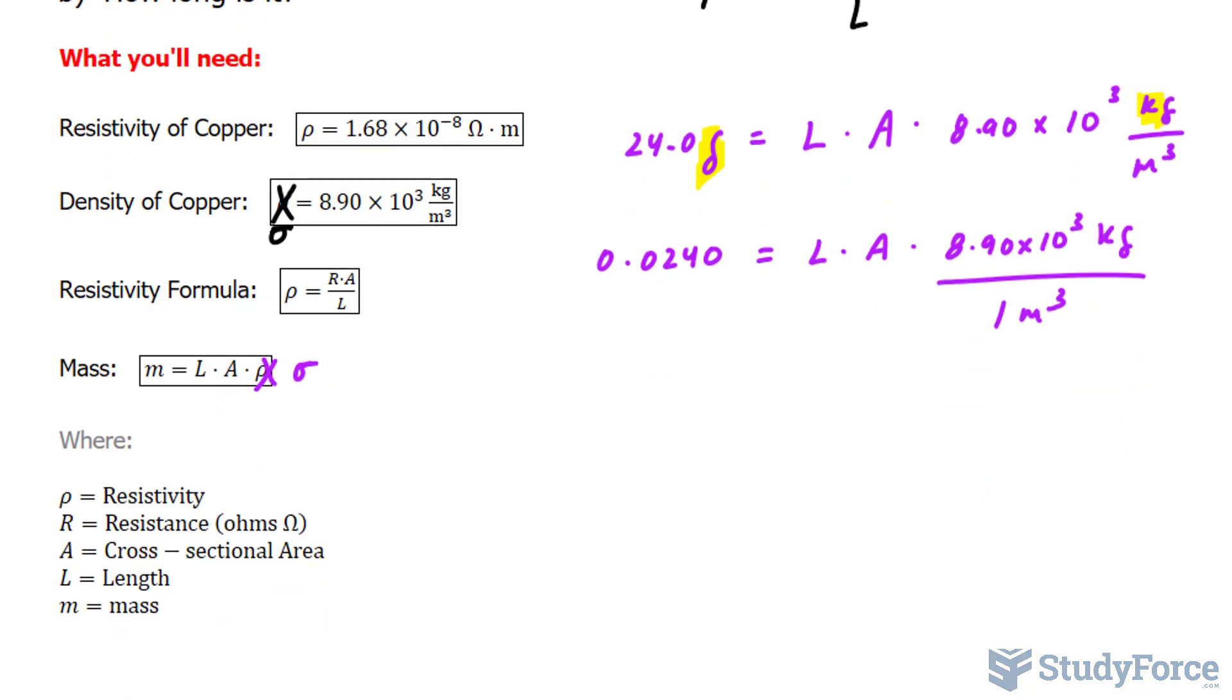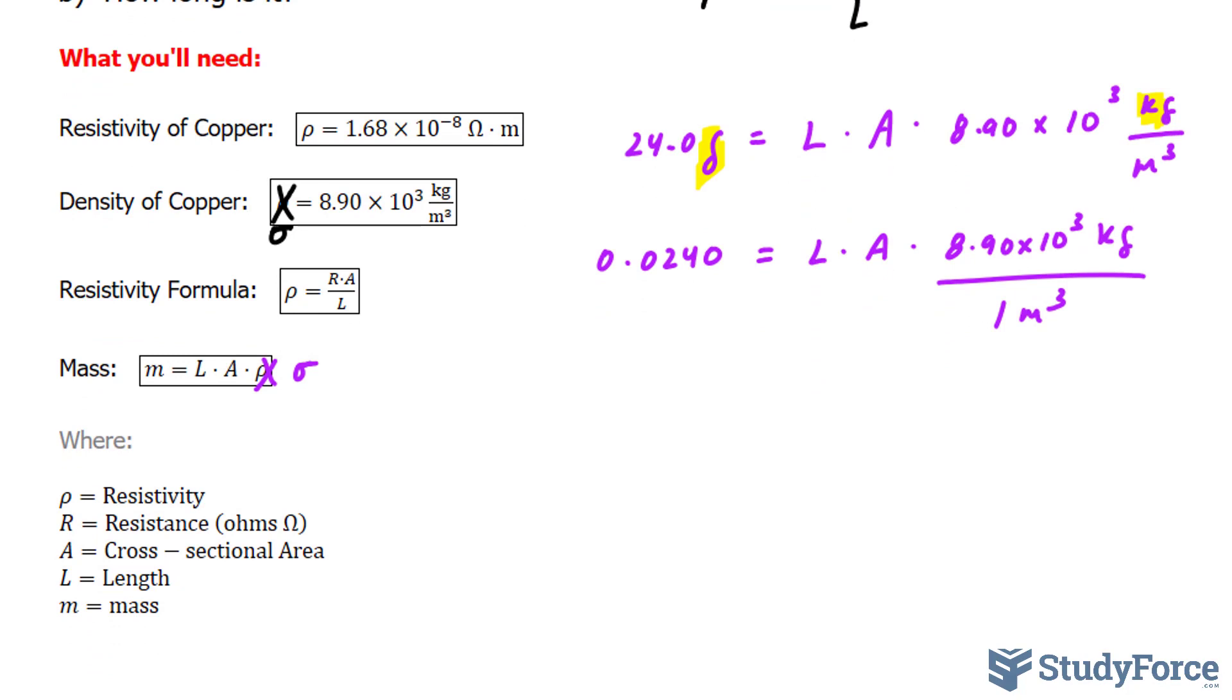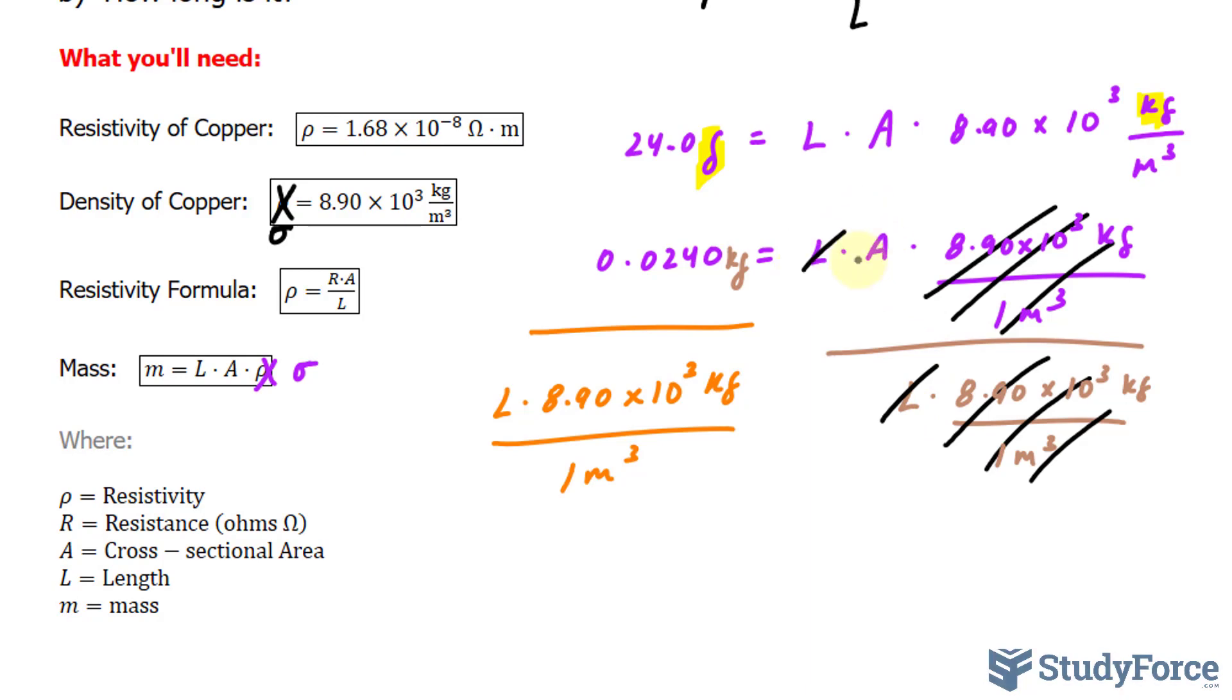What I will do with this relationship here is solve for A. Then take what I find for A and substitute it into this formula which we discussed earlier. Now don't take this lightly because you need to understand how the units all cancel out. So I will divide both sides by L and this number, 8.90 times 10 to the power of 3 kilograms per 1 meter cubed. And of course on this side as well. As you can see that will cancel out along with the L leaving us with A on the right side.